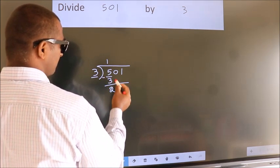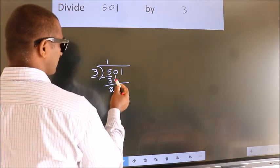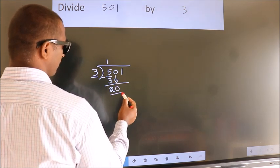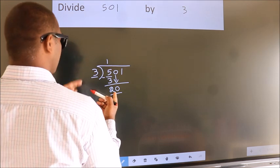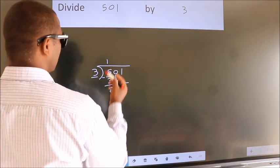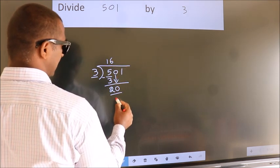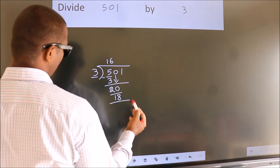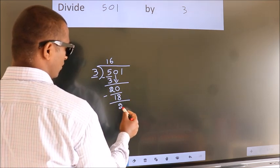After this, bring down the beside number. So, 0 down. So, 20. A number close to 20 in 3 table is 3 6 18. Now, we subtract. We get 2.